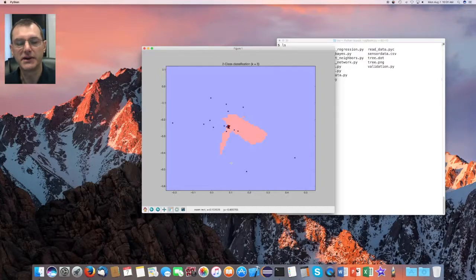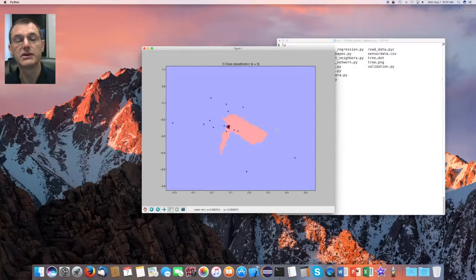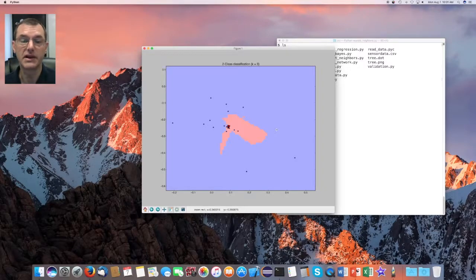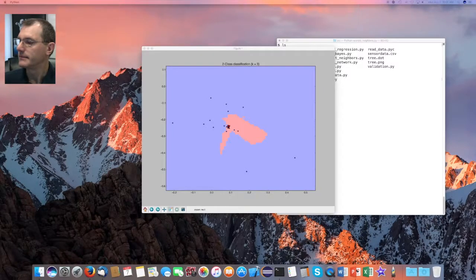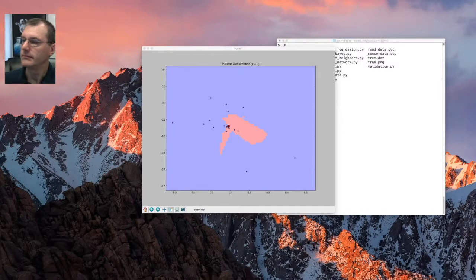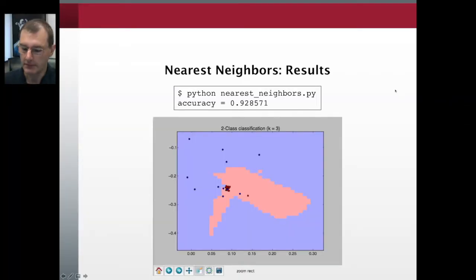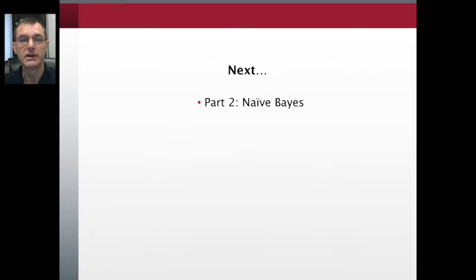So that's the nearest neighbors classifier. There are a lot of parameters you can play with. But our main goal is to be able to learn a classifier so we can perform statistical inference and classify new points to determine whether the person's activity is work or play.